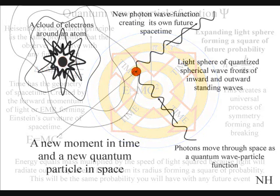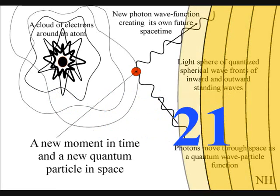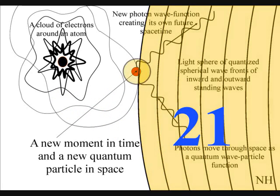Electrons in atoms can change energy levels by emitting or absorbing a photon of light, whose energy must be exactly equal to the energy difference between the two levels.